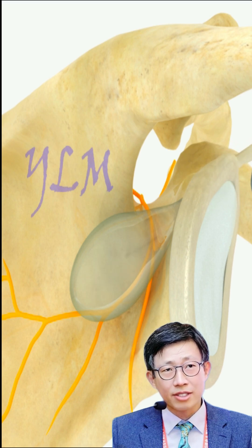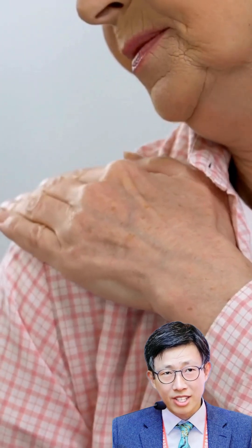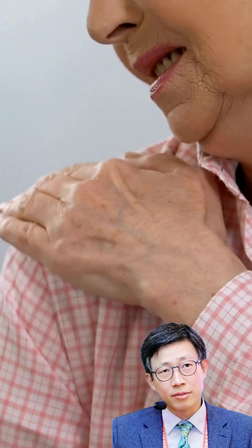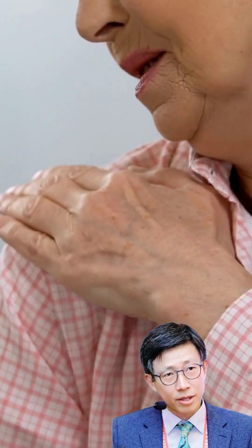Suprascapular ganglion cysts are most common in people between the ages of 20 and 50. They are more common in men than in women.